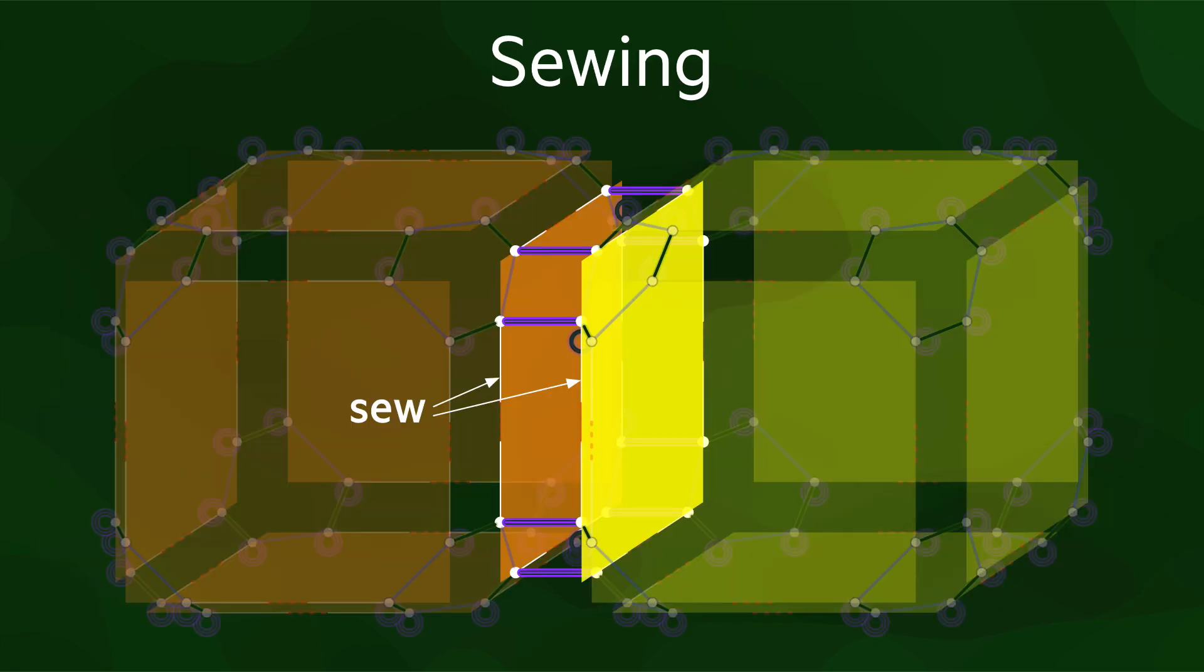Finally, we should mention the concept of sewing, which is the basic operation that is used to construct a generalized or combinatorial map. If we are careful about the way we implement an orbit, we can obtain all the darts of it in a consistent order.